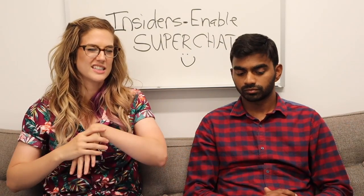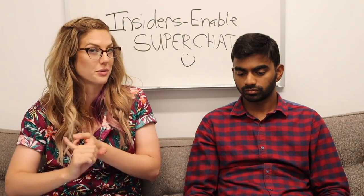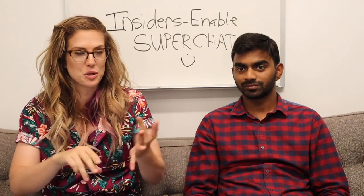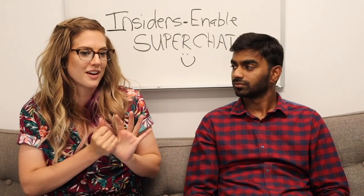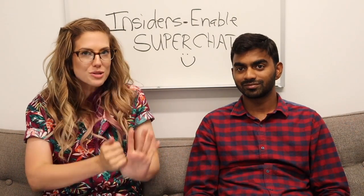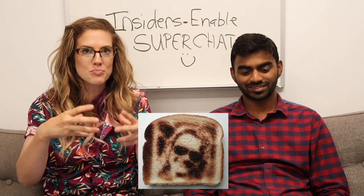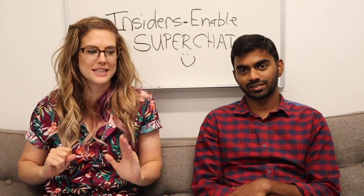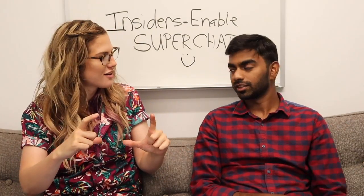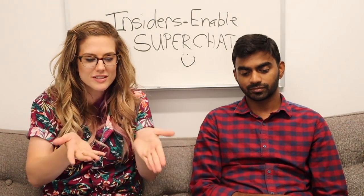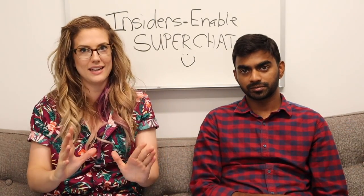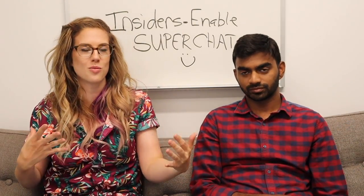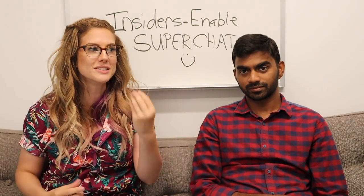IFTTT can connect to any internet-connected device. Think about your garage door opener, your washing machine, your dryer, your smart printer. Or my favorite — which I'm still trying to figure out how to do — your smart toaster. You know those toasters that can imprint and burn an image into your toast? How cool would it be for every Super Chat that comes in to have the avatar picture of the person who sent that Super Chat burned into the toast? And then you eat it. It's wacky, but it is possible with this. We're really excited to see all the different ways for you to be creative and really differentiate your streams.